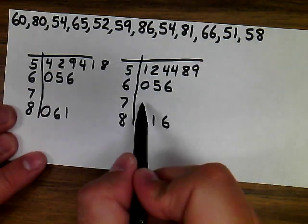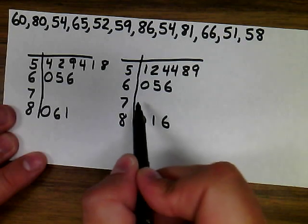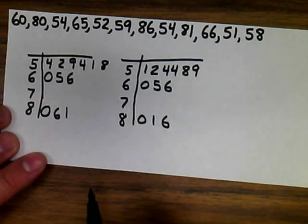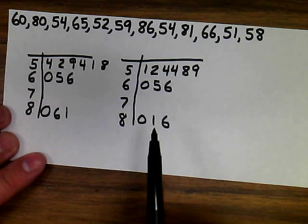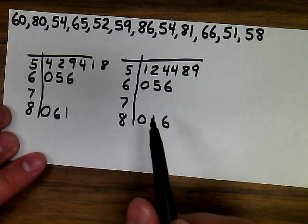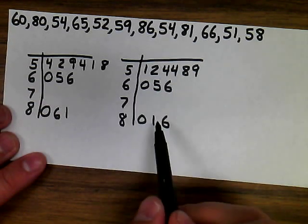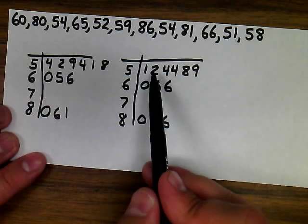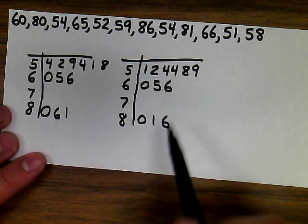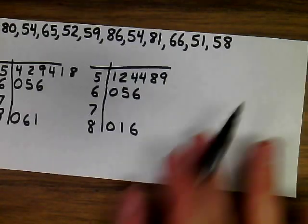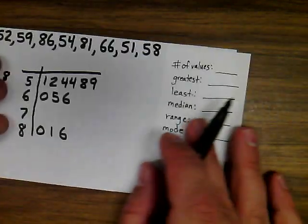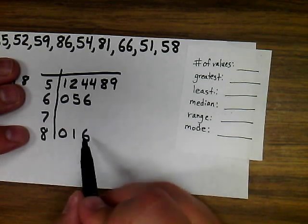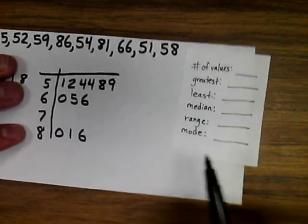You don't want to put a 0 in the 7 row to hold that space because that would indicate there's a 70 in our data set — and there is no 70 in our data set. It's also important to realize that the leaf doesn't stand alone. It's not a 2 here; it's a 52. So the greatest value in the data set is not the 9 leaf — that's a 59 — but rather 86.